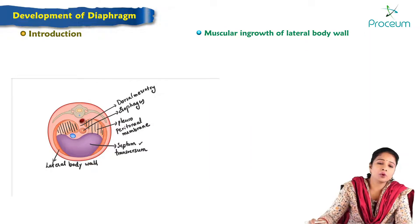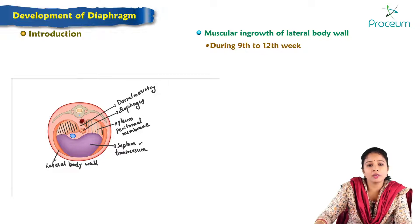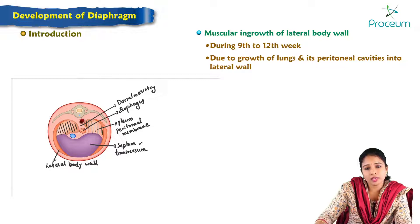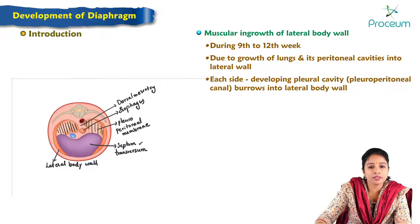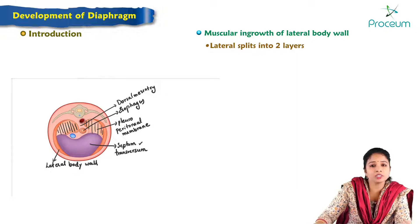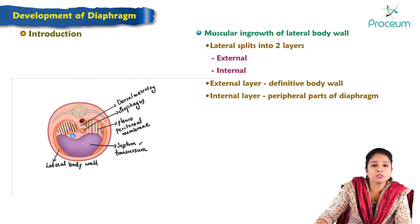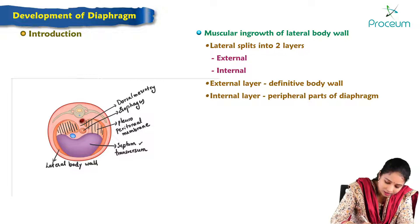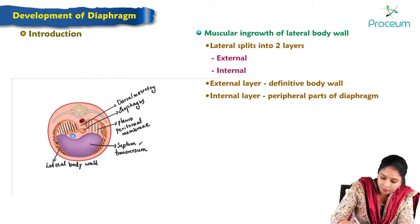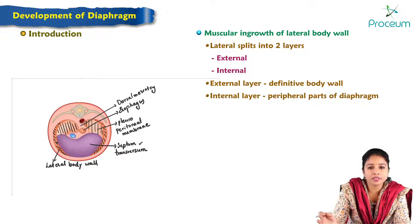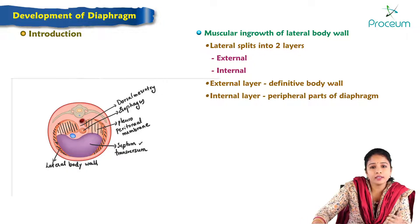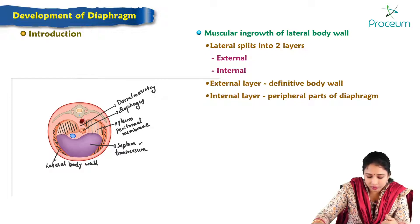Lastly, regarding the muscular ingrowth of the lateral body wall: during the 9th to 12th week of development, due to growth of the lung buds, the pleuroperitoneal canals burrow into the lateral body wall. The lateral body wall then splits into two layers — an external layer, which forms the definitive body wall, and an internal layer, which forms the peripheral part of the diaphragm. This internal layer fuses with the pleuroperitoneal membrane and septum transversum to form a complete diaphragm.